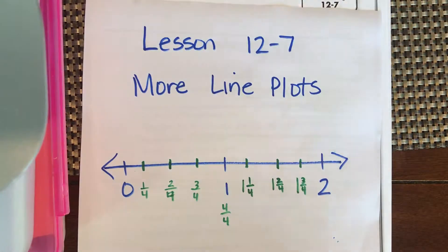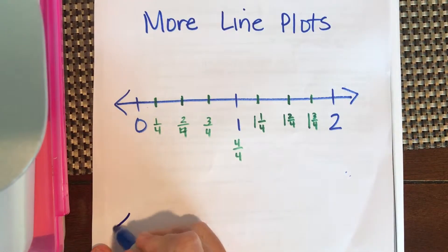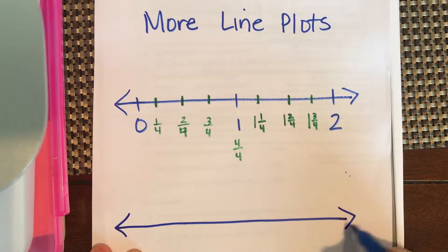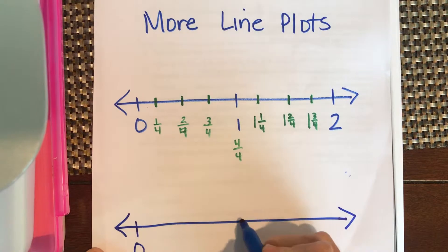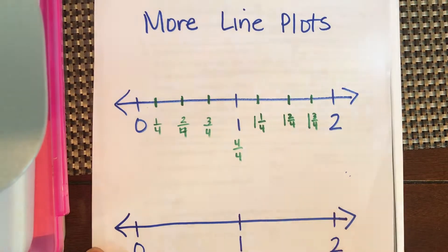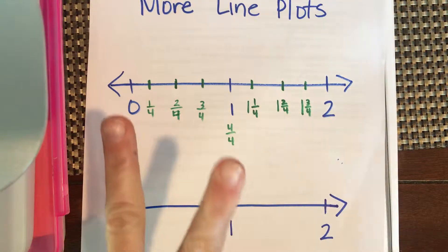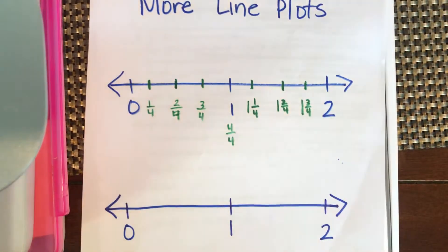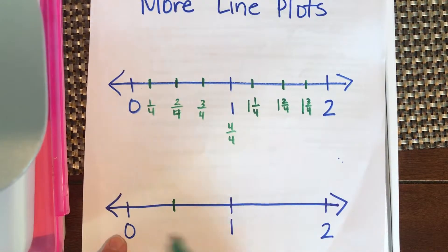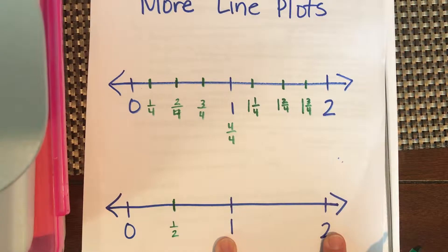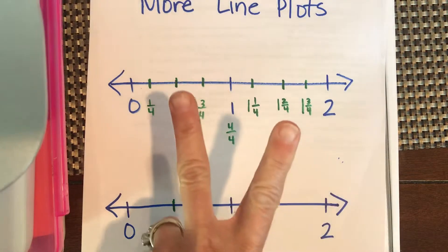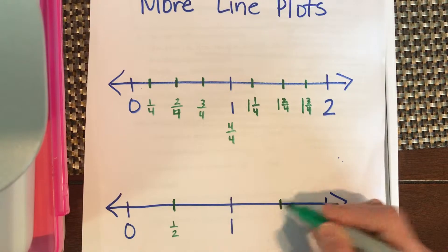Just like we can cut a pizza into fourths or into halves — it's still the same pizza — we can measure things to the nearest fourth of an inch or to the nearest half of an inch. To break the line into halves, we have two parts, so we draw one line. If this is zero and this is one, this is one-half. Between one and two, we continue with halves and draw one line.